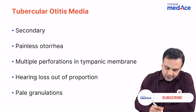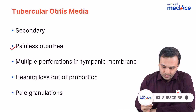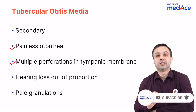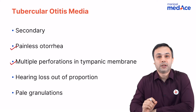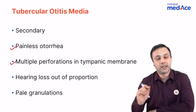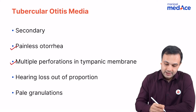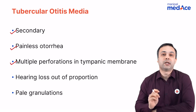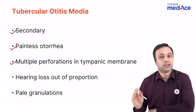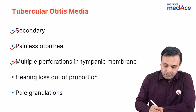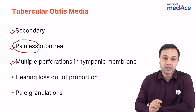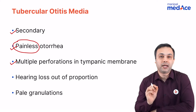Look for the following factors: painless otorrhea and multiple perforations in the tympanic membrane. Tuberculosis of the middle ear is secondary to a primary tuberculosis in the lung and it produces a painless otorrhea. Remember the word painless.